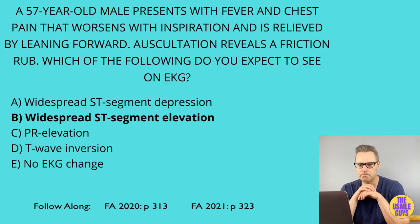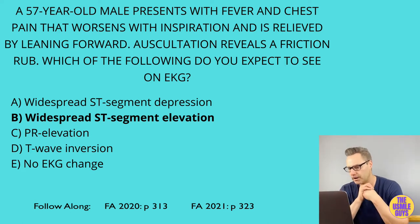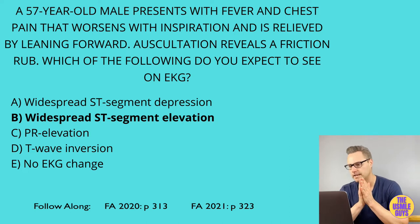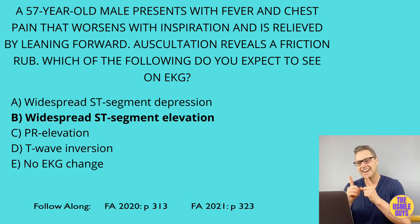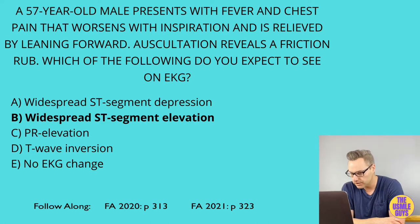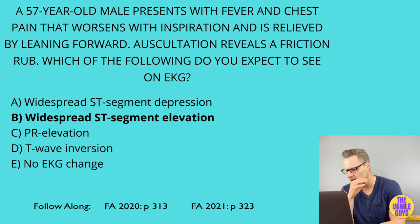The correct answer here is B. We're dealing with pericarditis. The findings of pericarditis are actually pretty easy to identify in a vignette. You'll see fever, chest pain that is sharp and worsens with inspiration, improves with leaning forward, and has that classic friction rub on auscultation. Typically, when this shows up, we assume a viral origin, unless there's another likely cause like an autoimmune reason, infection, or neoplasm.